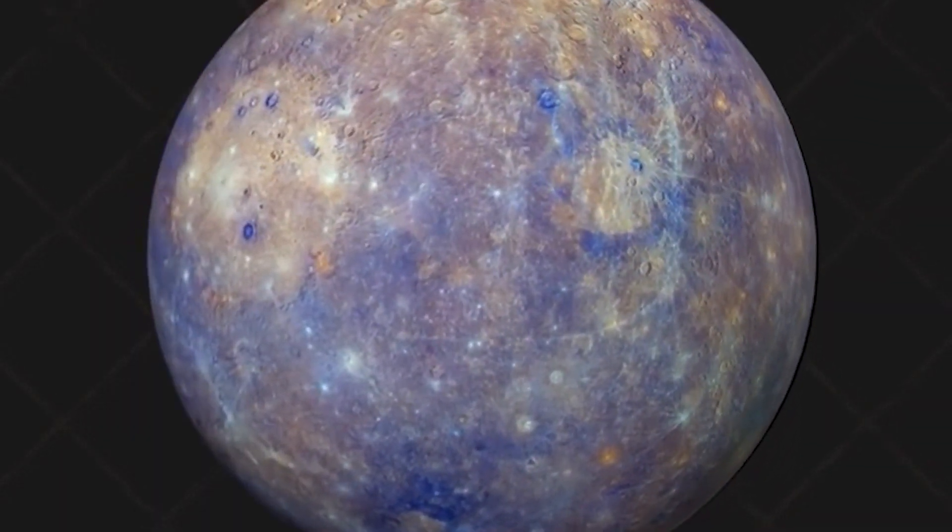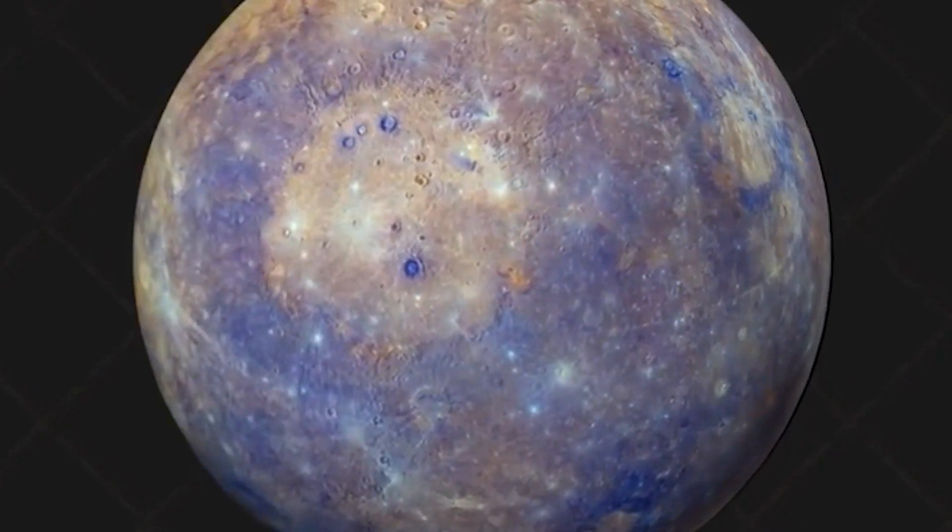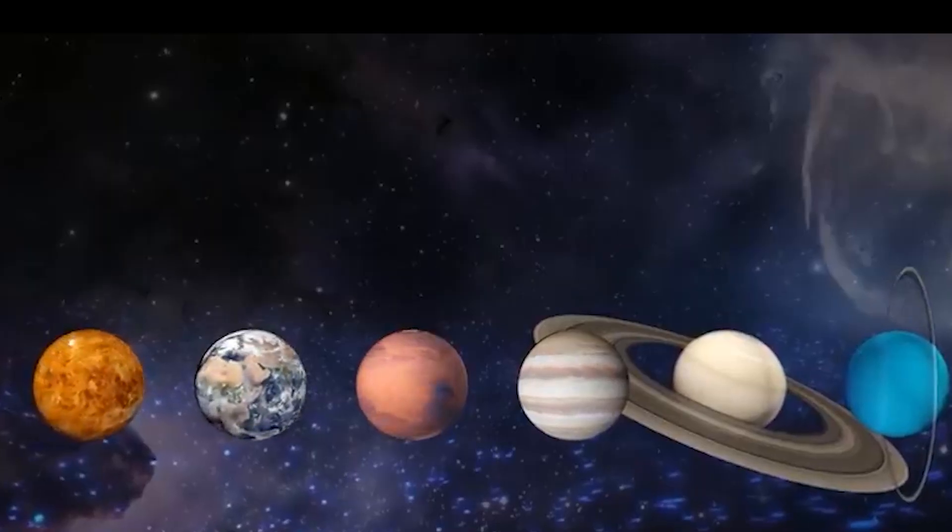Mercury, on the other hand, which is the planet in our solar system that is situated the closest to the Sun, completes one orbit every 87 days.